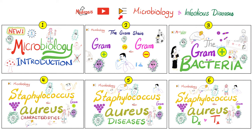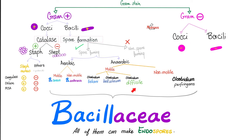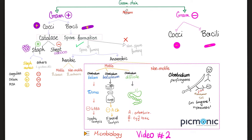Please watch the videos in this playlist in order. Clostridium difficile is a gram-positive rod, spore-forming, anaerobic, and motile. It can produce two types of toxins: Toxin A is enterotoxin, and Toxin B is cytotoxin — the second letter in the alphabet is cytotoxic.